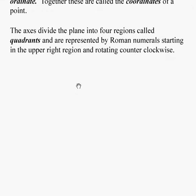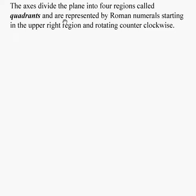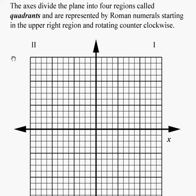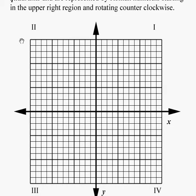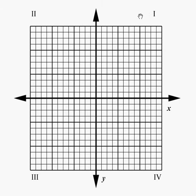When we take two lines, the x and y axes, and draw them in a plane, it divides that plane into four regions called quadrants, prefix quad meaning four. We use Roman numerals starting in the upper right corner and rotating counterclockwise. We have quadrant one, quadrant two, quadrant three, quadrant four in this area. Our x-axis going horizontal, our y-axis going vertical.